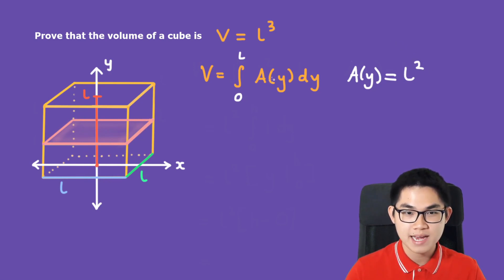So let's just put it back into our formula. The third and final step is to evaluate this integral. So here, L is a constant. We can move it outside of the integral.